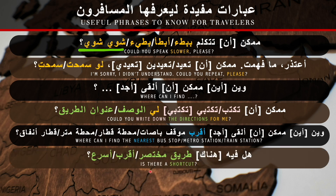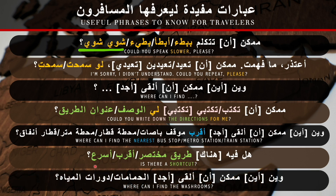'Where can I find the nearest...?' — this could be a bus stop, metro station, train station, or taxi. Also: 'Is there a shortcut?' And very importantly: 'Where can I find the washroom?' In Modern Standard Arabic: أين ممكن أن أجد الحمامات / دورات المياه؟ In Saudi dialect: وين ممكن ألقى الحمامات / دورات المياه؟